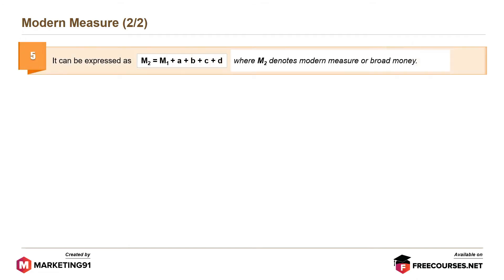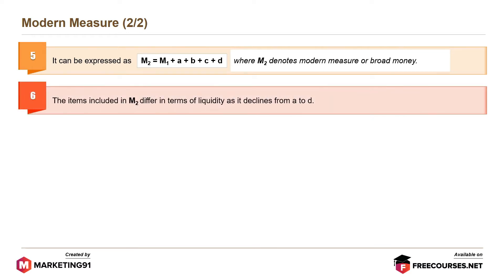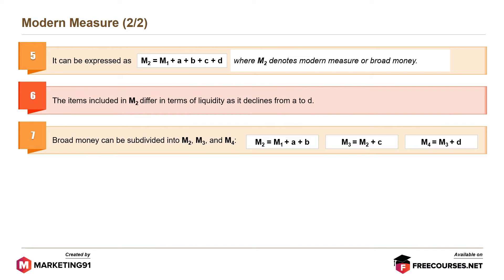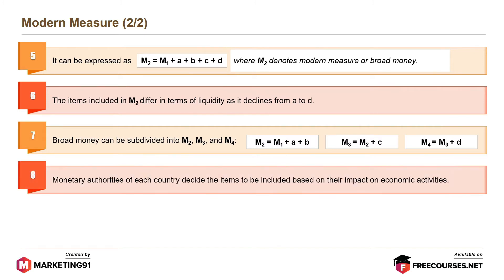Broad money can be expressed as M2 equals M1 plus A plus B plus C plus D, where M2 denotes modern measure or broad money. The items included in M2 differ in terms of liquidity as it declines from A to D. Broad money can be subdivided into M2, M3 and M4: M2 equals M1 plus A plus B, M3 equals M2 plus C, and M4 equals M3 plus D. Monetary authorities of each country decide the items to be included based on their impact on economic activities.